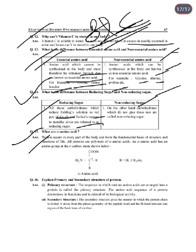Next: What are alpha amino acids? Alpha amino acids are the fundamental basis of structure and function of life. All proteins are polymers of alpha amino acids. An alpha amino acid has an amino group (–NH₂) attached to the alpha carbon atom.